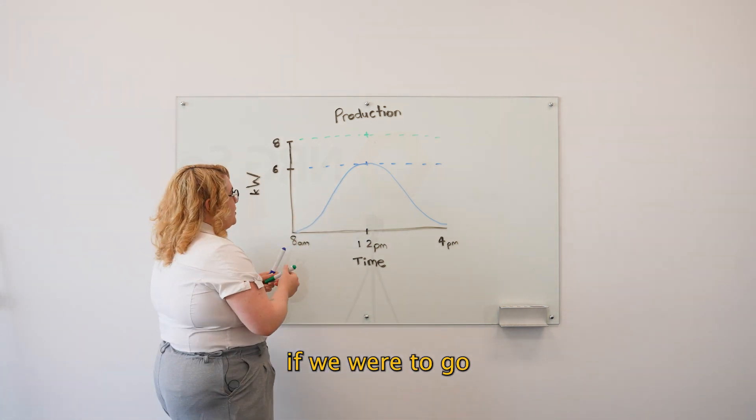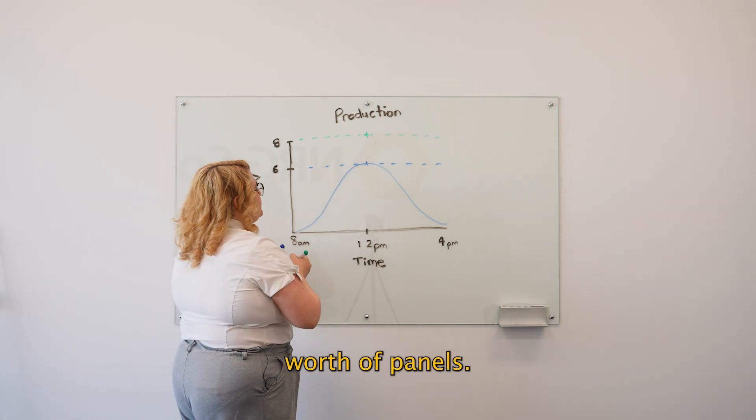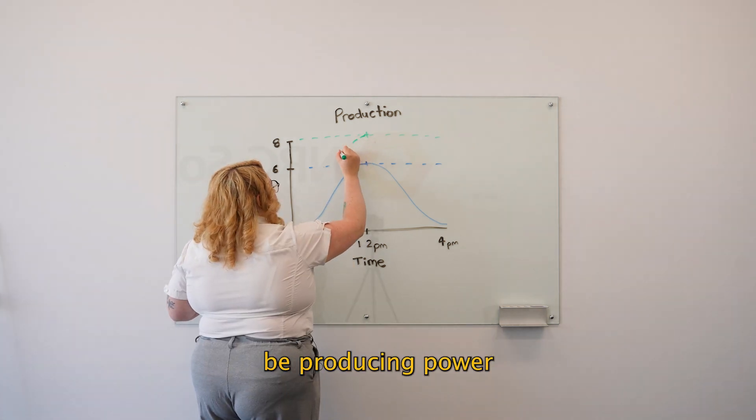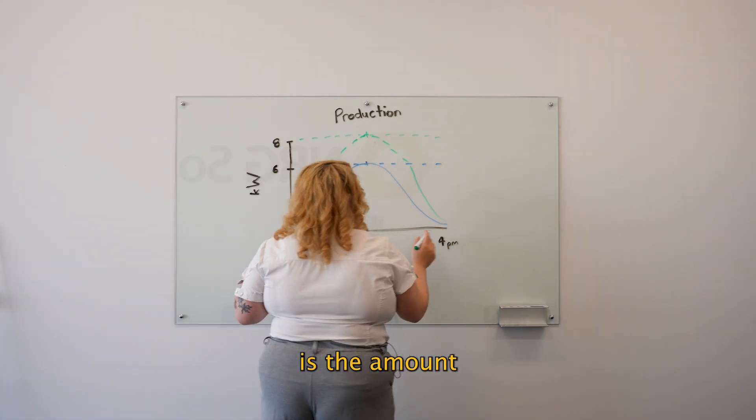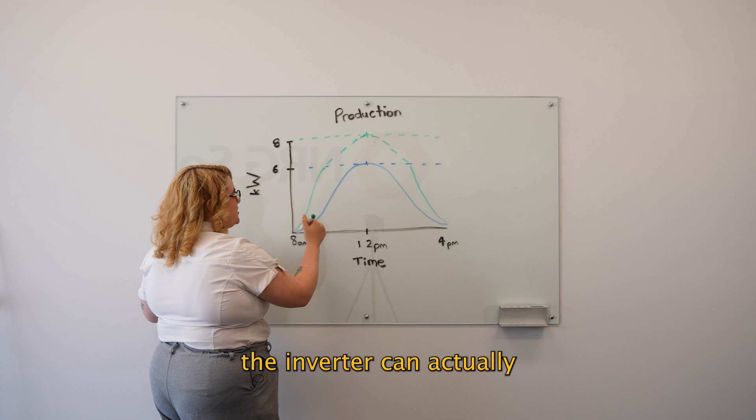On the other side, if we were to go with eight kilowatts worth of panels, it has the potential to be producing power all the way through here as well, and this is the amount of power that the inverter can actually pull down.